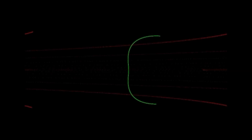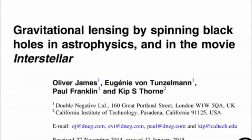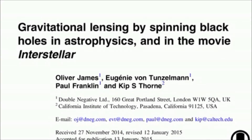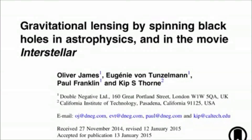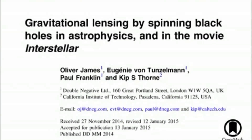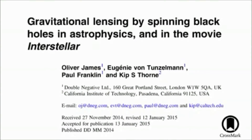By relating these curves back to the movies we created, we were able to gain a deeper understanding of the swirling images we had seen. Our paper, Gravitational Lensing by Spinning Black Holes in Astrophysics and in the movie Interstellar, describes this work in detail.